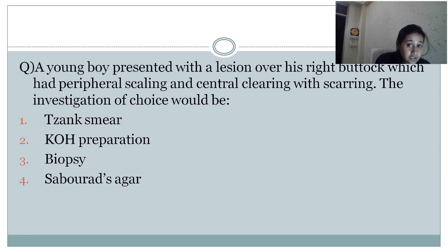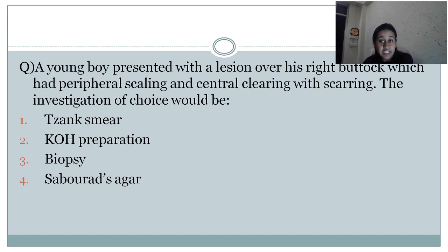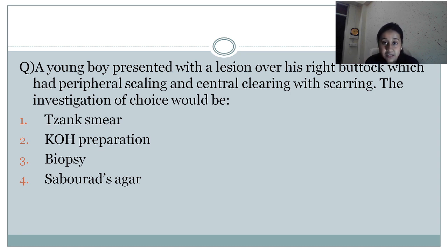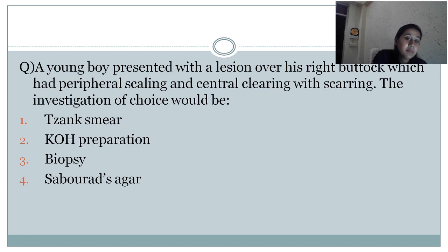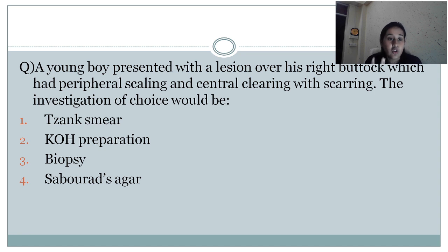The answer to the question is biopsy, not KOH preparation. Here the patient has a lesion over the right buttock with peripheral scaling and central scarring — it is a case of skin tuberculosis, and the investigation of choice for skin tuberculosis is biopsy where you can see tuberculous granulomas. Ziehl-Neelsen smear is used for vesiculobullous disorders like pemphigus vulgaris. KOH preparation is for dermatophytic fungal infections, and Sabouraud's agar is a culture medium for fungal infections — not for tuberculosis. So the answer is option three, biopsy.